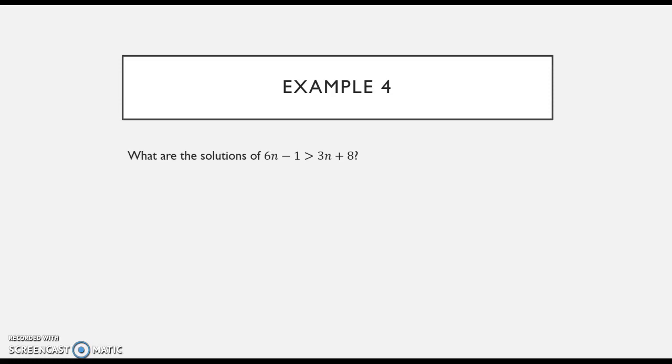Here we have variables on both sides of the equal sign. So what we're going to want to do first is make it to where we have our variables on the same side. As I said before, I always like to move my variables so that my variable is positive. And so since the three is smaller than the six, I'm going to subtract three n from both sides.